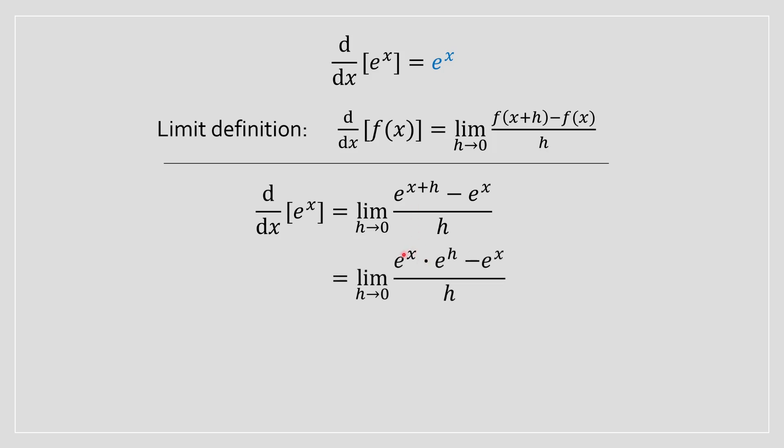Next step, we're going to expand this using the laws of exponents and we're going to factor out an e to the power of x. Afterwards we're going to distribute the limit. So essentially we're going to have the limit as h approaches 0, e to the power of x, and then the limit as h approaches 0, e to the power of h minus 1 divided by h.